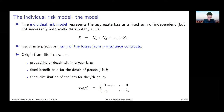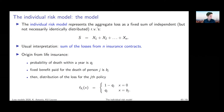Now let's take one extra step and generalize the aggregate loss setting. What's a bit limited here is the loss amount denoted by the small bj — we assumed it's fixed. While that makes sense in a life insurance setting, we can generalize the individual risk model by allowing bj to be random as well. That's the next step we're going to take.